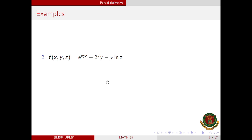For the next example, f(x, y, z) equals e raised to xyz minus 2 to the xy minus y times ln z. There are three independent variables, so we find fx, fy, and fz. For fx: the derivative of e to the xyz with respect to x is e to the xyz times yz, by the chain rule, since yz is constant and x is the variable. For the term 2 to the xy, y is constant so we differentiate 2 to the x, giving 2 to the x times ln 2, so the result is y times 2 to the x times ln 2. The term y times ln z is constant with respect to x, so that is 0.